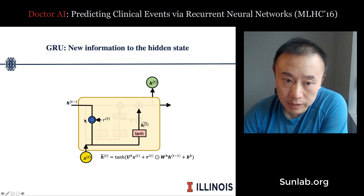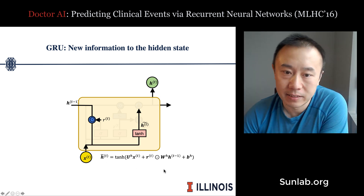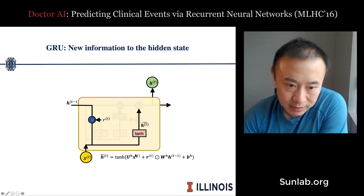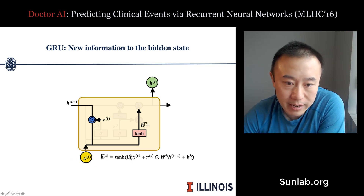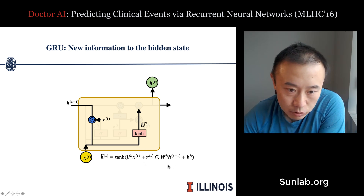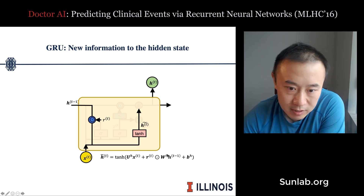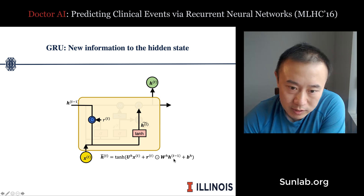The next step determines how much new information to add to the new hidden state. It takes the input x_t and applies the reset gate r_t via element-wise multiplication with W_h times h_{t-1}. If r_t is close to zero, we take 100% new information from x_t. If r_t equals one, all the previous hidden state information is allowed to flow forward. This element-wise multiplication controls the information flow.